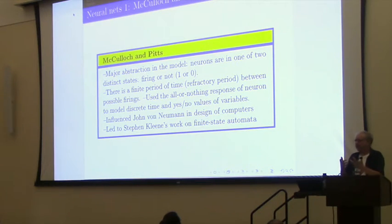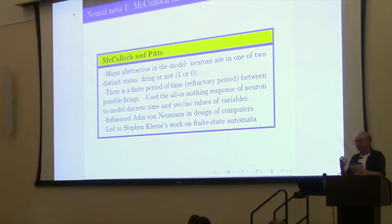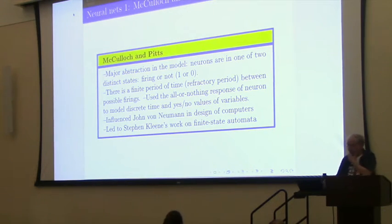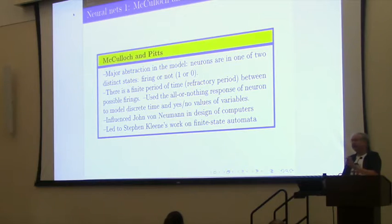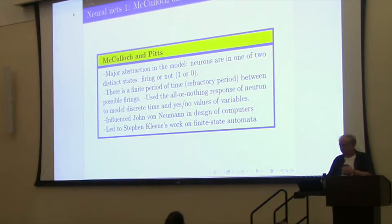John von Neumann, who was one of the people in charge of the development of the computer as part of a war effort, wrote up the signal paper that explained where the United States was going with their computers. It made a number of references to the material that had just been published in the McCulloch and Pitts paper. This 1943 paper led to work by Stephen Kleene at the beginning of the 1950s, when he was a graduate student developing the notion of finite state automata — which hadn't existed before — and he based his work on an understanding of the McCulloch and Pitts story.